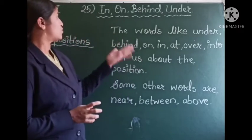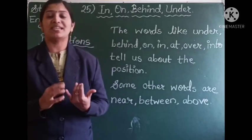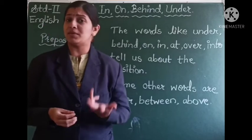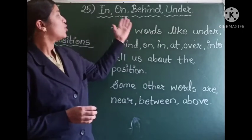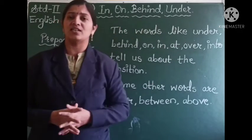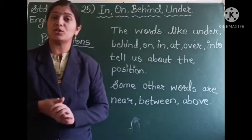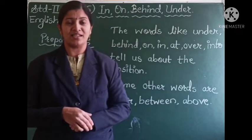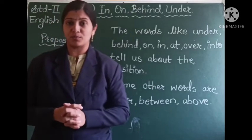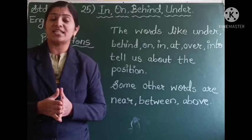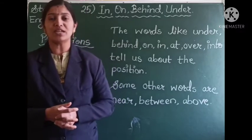All these words tell us about the position of something — maybe it is an animal, some object, maybe some human being or any other thing. So these words like in, on, behind, under are called position words because they tell us about the position of something. Now let us read a few sentences from your grammar book, and then I will tell you in detail about these words. We will also solve the exercise given in our grammar book.